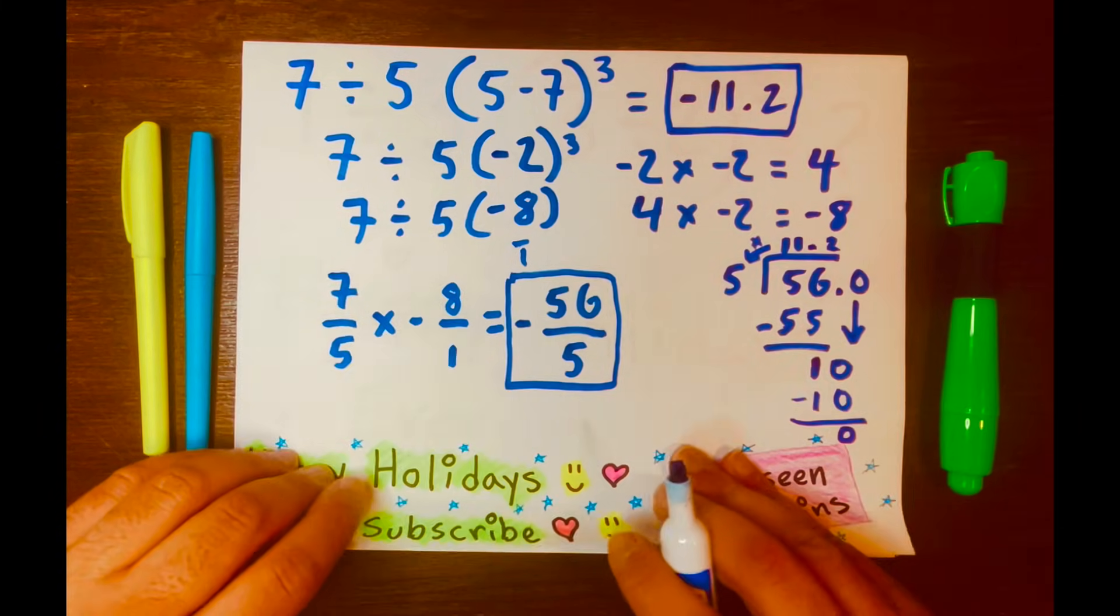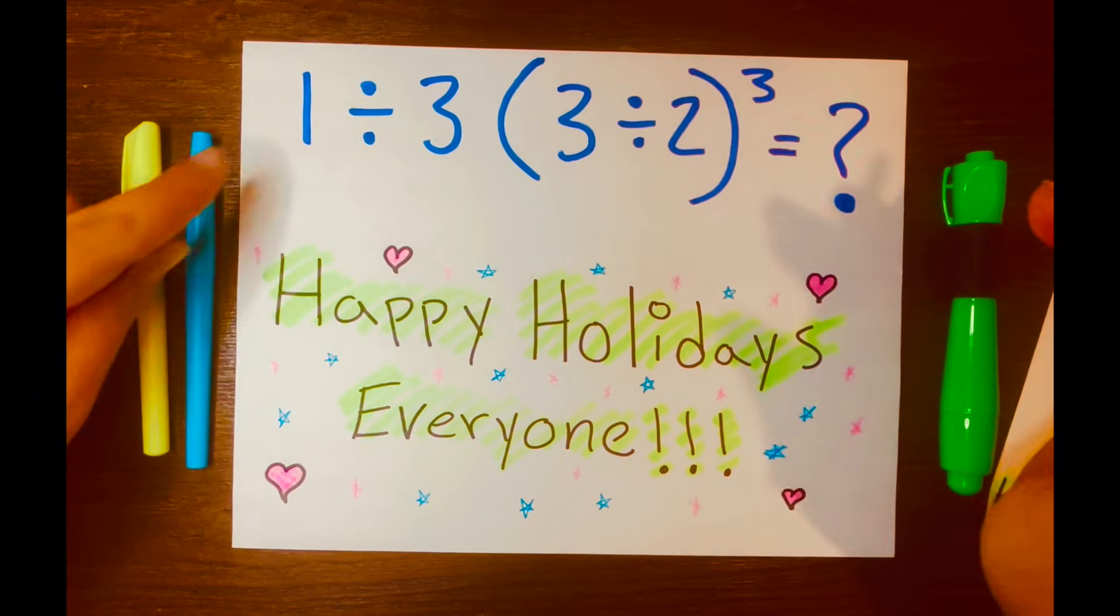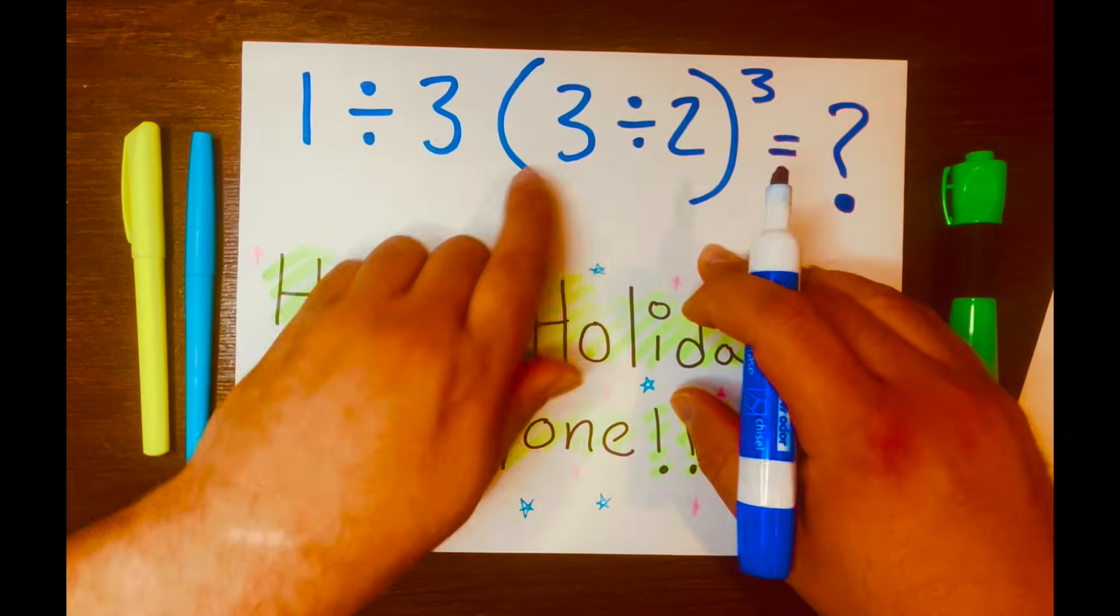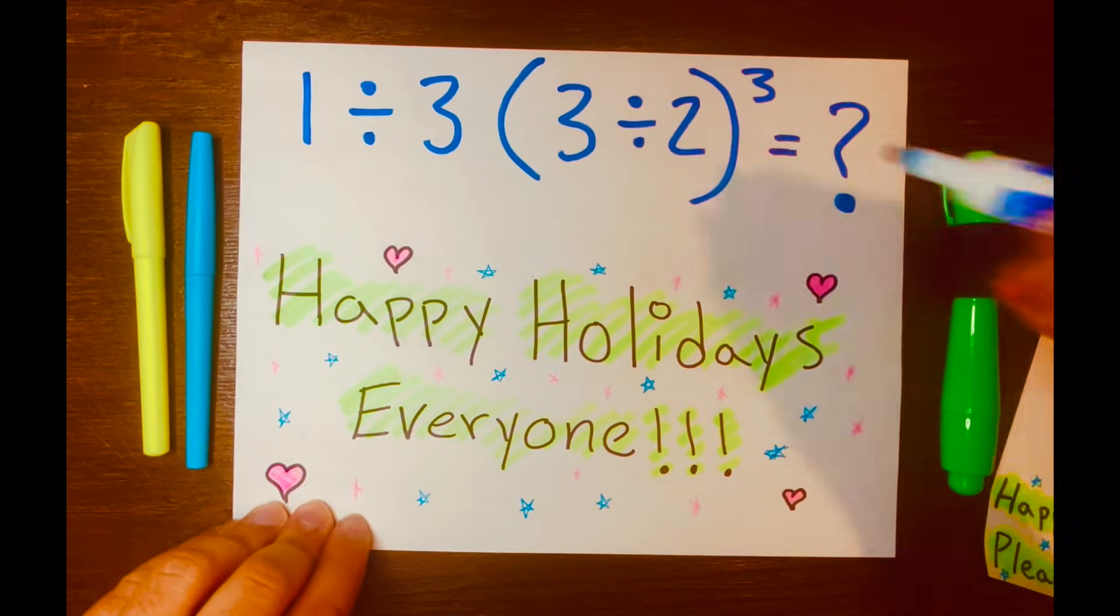Now, go ahead and solve this math problem. 1 divided by 3, and then you have 3 divided by 2 inside these parentheses with an exponent of 3. Put your answers in the comment section down below.